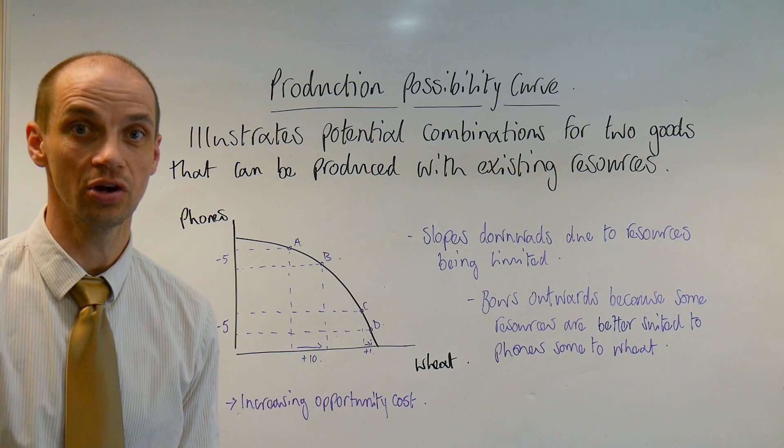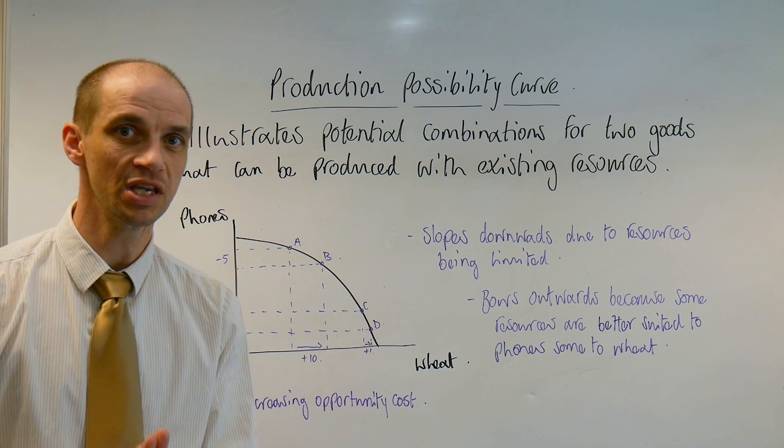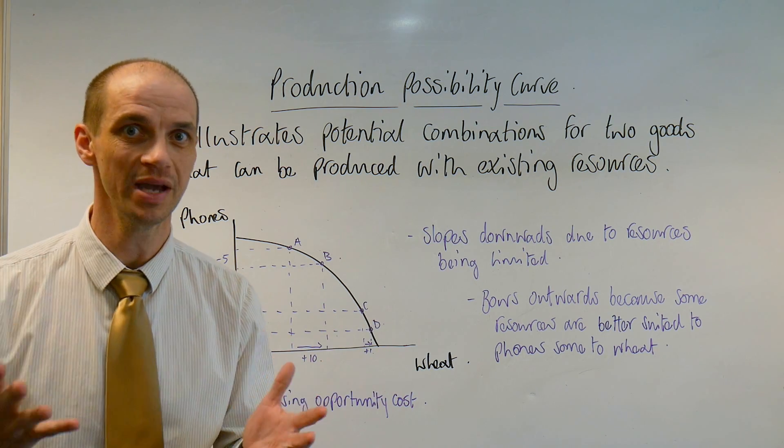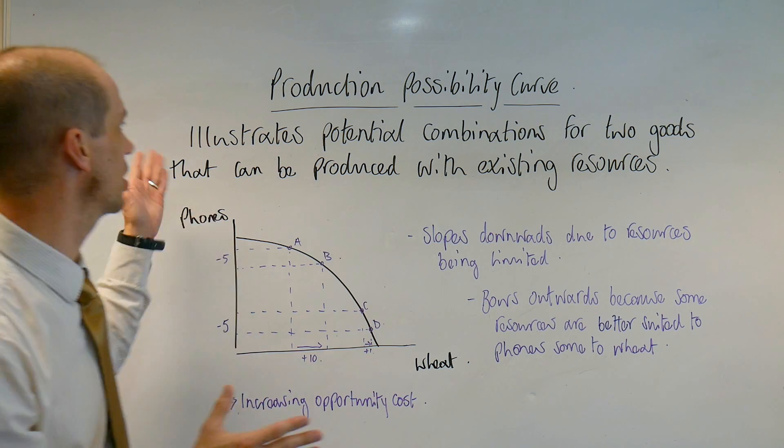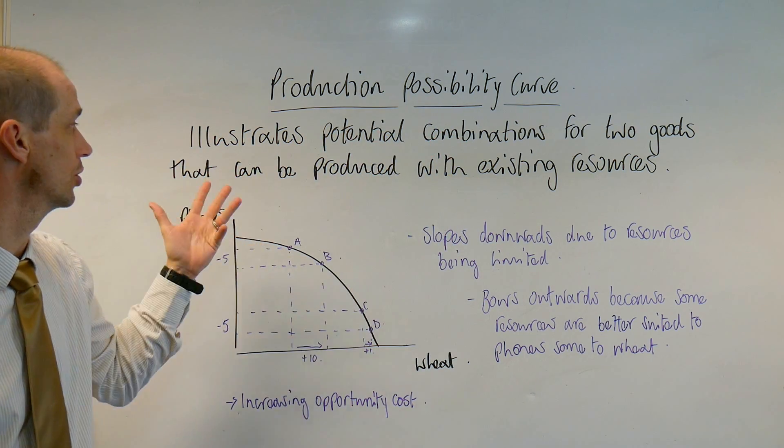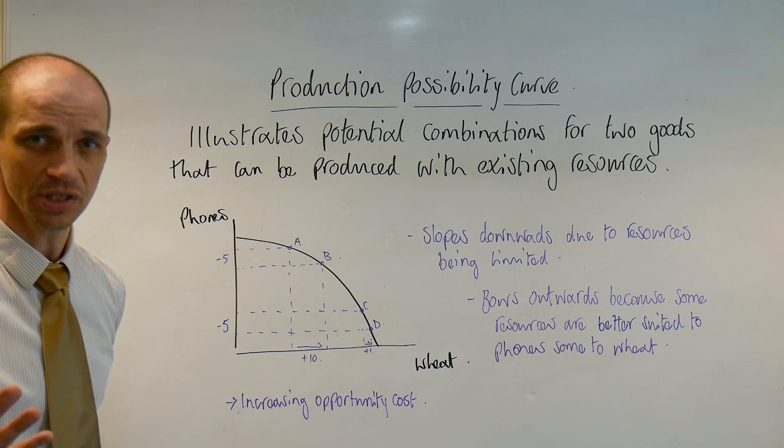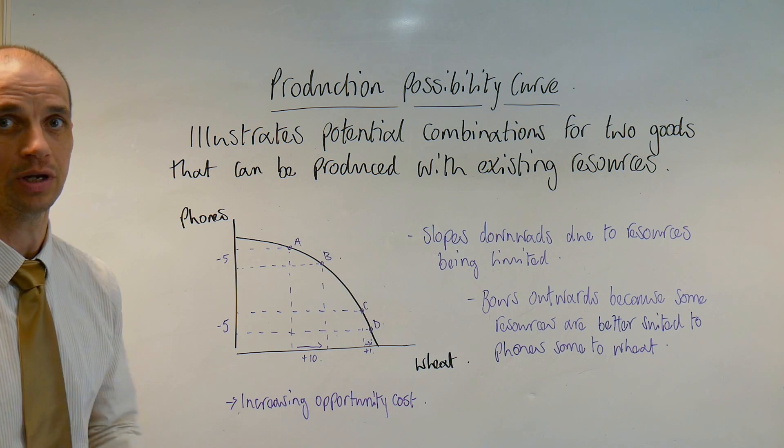Hi guys, so let's now take a look at the production possibility frontiers or production possibility curves or boundaries as you may see them. These simply illustrate potential combinations for two goods that can be produced with existing resources. They're nice straightforward diagrams to actually understand.